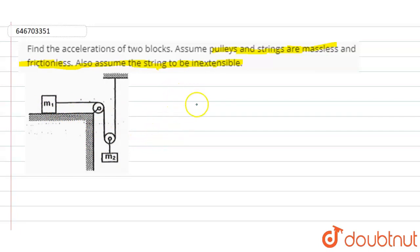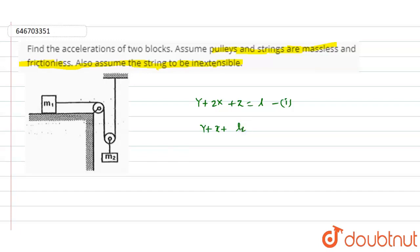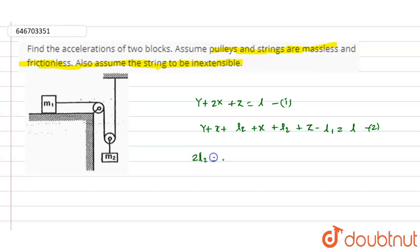According to the given question, we write: y + 2x + z = l — call this equation 1. Then we write: y + x + l2 + x + l2 + z − l1 = l — call this equation 2. Subtracting equation 1 from equation 2, we get 2l2 = l1.